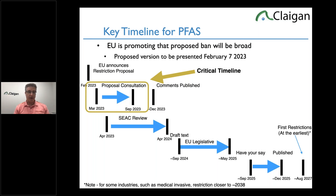You're going to have to report federally in about a year and in Canada later this year. You need it for all the same reasons — basically the same data: what you're intentionally adding as PFAS, which are almost exclusively fluoro polymers.